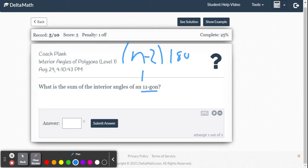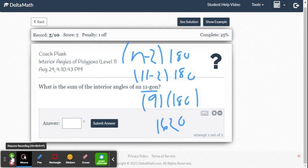So we're going to go 11 minus 2 times 180 degrees. So that gives us 9 times 180, and then we're just going to use our calculator. And the calculator says it's 1,620.